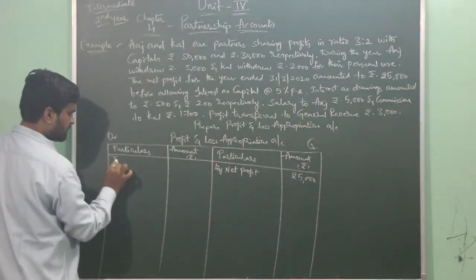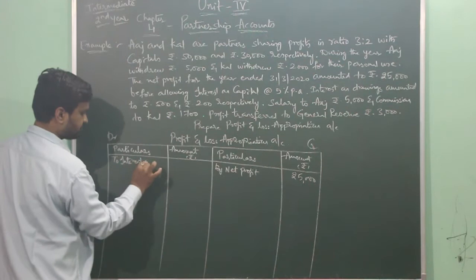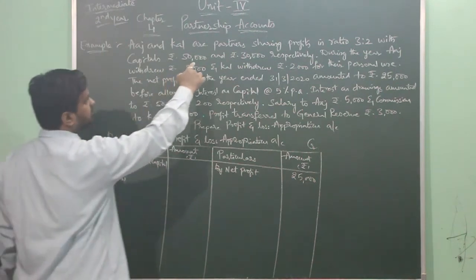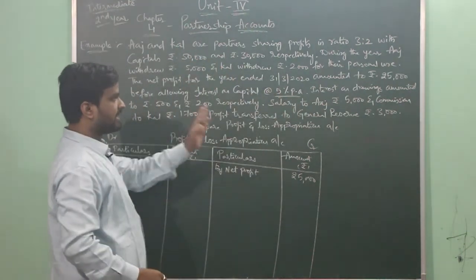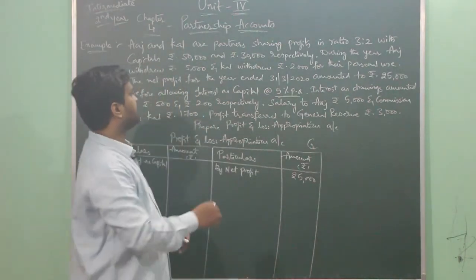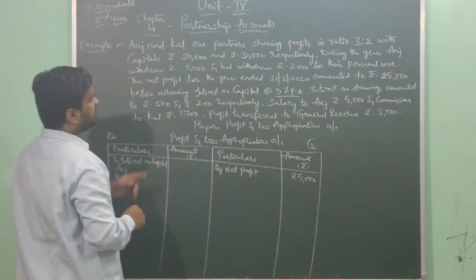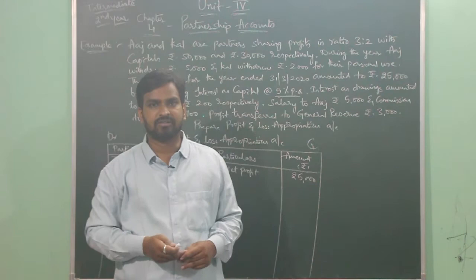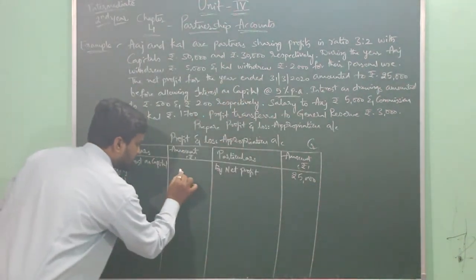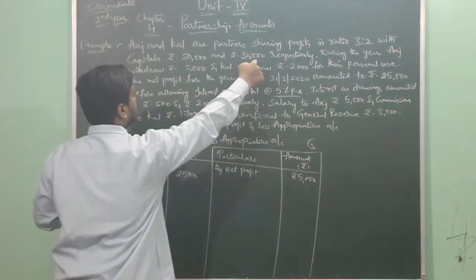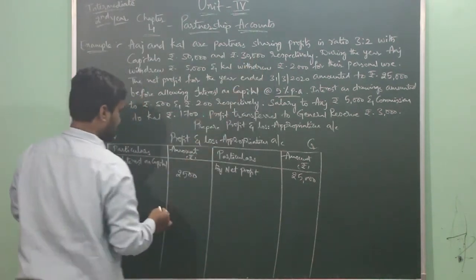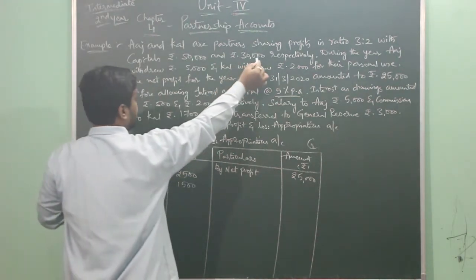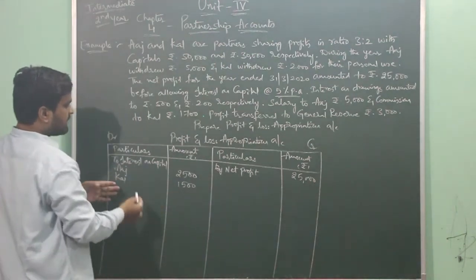The account will be debited with Interest on Capital, recorded as 'To Interest on Capital'. Aaj's capital investment is 50,000. Interest on capital is given at 5% per annum. To calculate: 10% of 50,000 is 5,000, so 5% is half of that, which is 2,500. So interest on capital for Aaj is rupees 2,500. For Kull: 10% of 30,000 is 3,000, and 5% is half of 3,000, which is 1,500. So Aaj gets interest on capital of 2,500 and Kull gets 1,500.